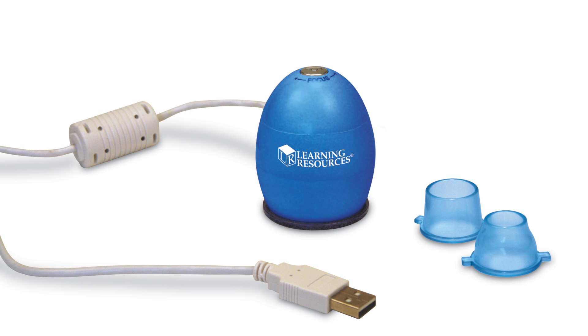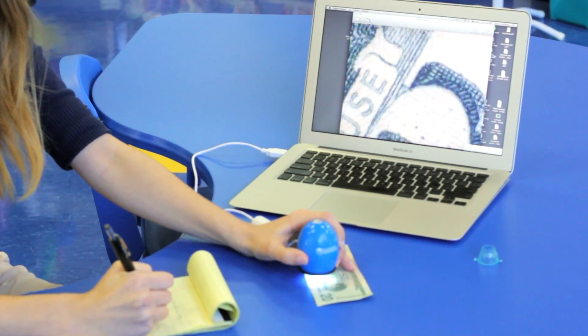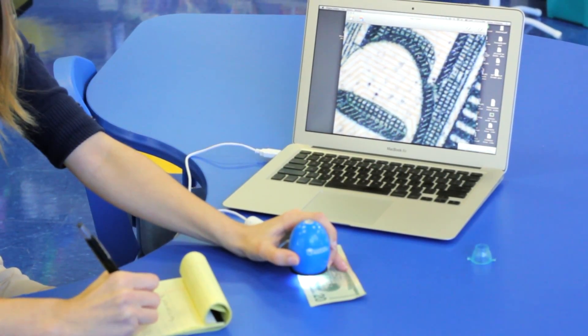Meet Zoomie, a fun and affordable handheld digital microscope that can display images of 35 to 53 times magnification on your computer or interactive whiteboard.